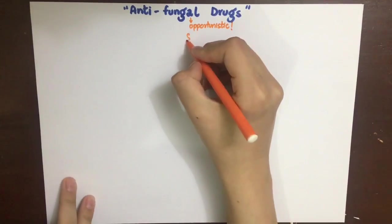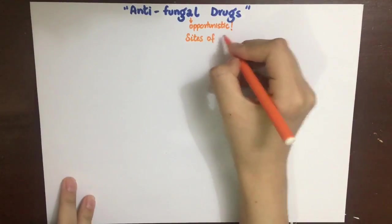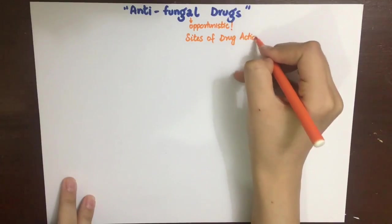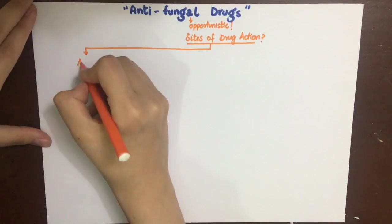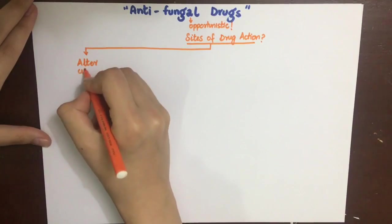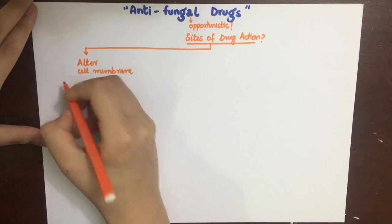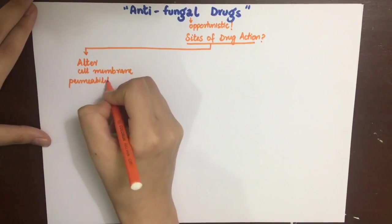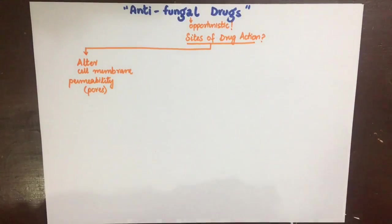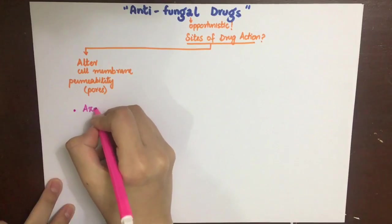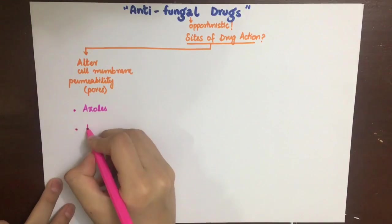Some drugs alter cell membrane permeability by making pores in the cell membrane, leading to leakage of cellular contents and death of the fungus cell. These drugs include azoles, polyenes, and terbinafine.